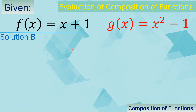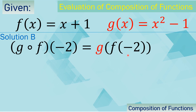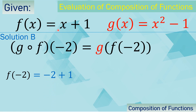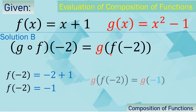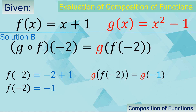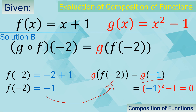Remember that we also have another method. f of negative 2 can also be solved, and that is negative 2 plus 1 using f of x equals x plus 1. So f of negative 2 is negative 1. We can now replace f of negative 2 with negative 1, because the range of f of x, which is negative 1, will become the input of function g. That is why it becomes g of negative 1, and squaring negative 1 gives 1, and 1 minus 1 is 0. We got the same answer regardless of which solution you use.